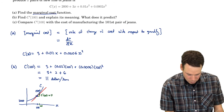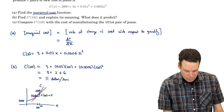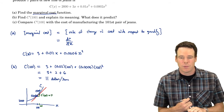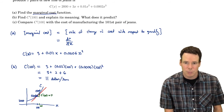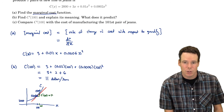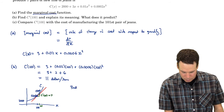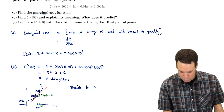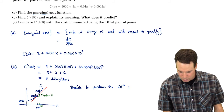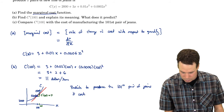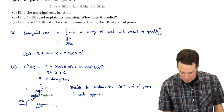C(101) is the point on the curve, and C(100) is down here. How much do I have to jump to get from C(100) to C(101)? That's the cost to produce that 101st pair of jeans. And the tangent line is a good approximation to the graph, so this is telling me it takes roughly $11.00 to make that jump. So this predicts: to produce the 101st pair of jeans, it costs approximately $11.00.